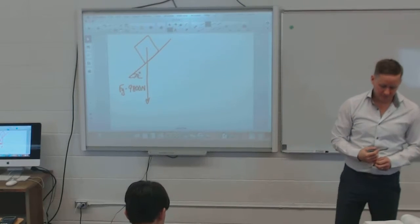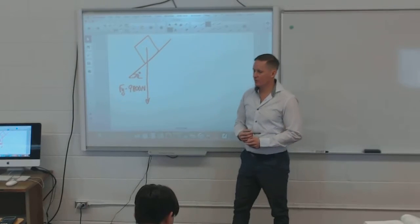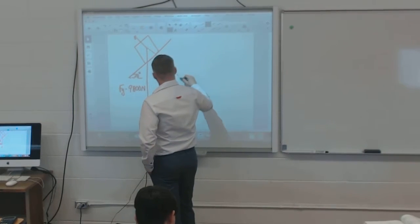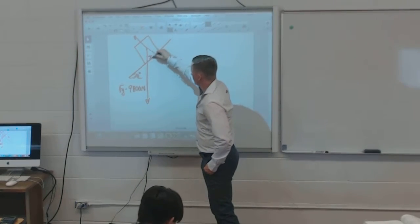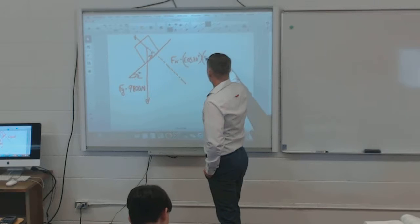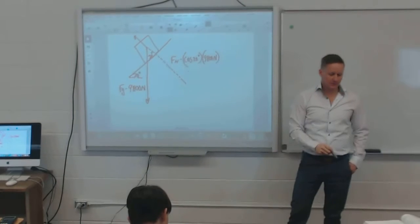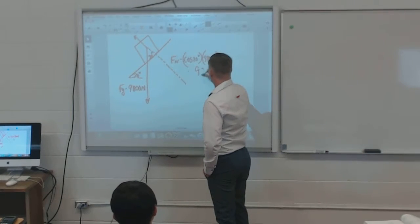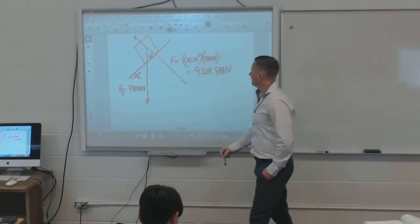The normal force works perpendicular to the surface. To get the normal force, I take cos 20° × 9,800 N, which gives approximately 9,208.98 N.